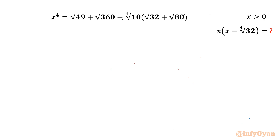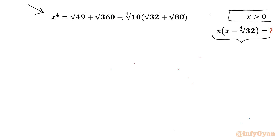Welcome back to InfiJarn, my dear friends, in this very exciting and challenging video on Radical Expressions. Here we are going to evaluate x times (x minus ⁴√32). The given equation is x⁴ = √49 + √360 + ⁴√10 times (√32 + √80), where x is positive and real.